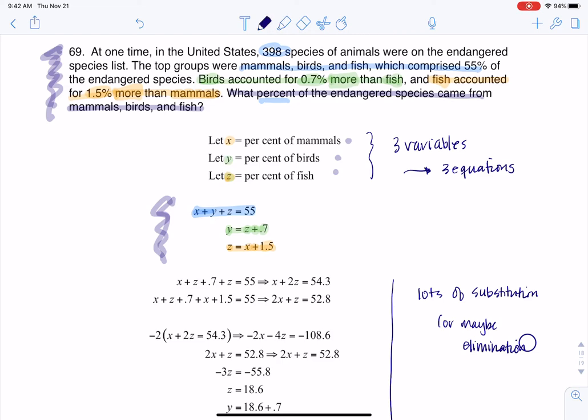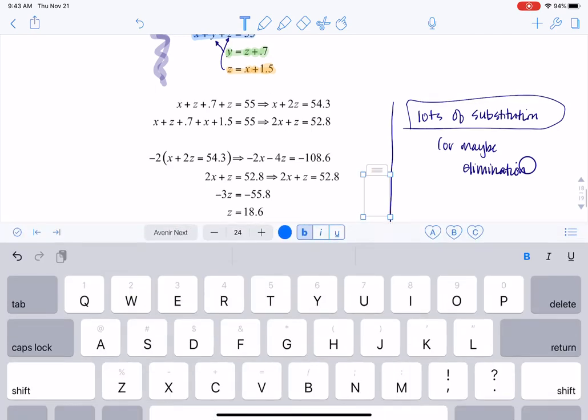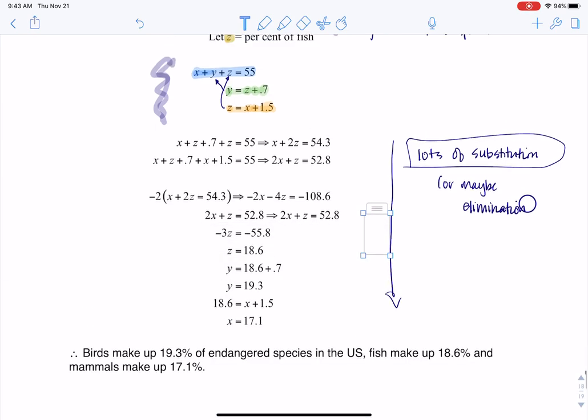And after that it's a bunch of substitution. So what I wind up doing is I'll sub y in here with z plus 0.7, and then I'll substitute z in here with x plus 1.5 and I just keep on going. Like I said there is a lot of substitution and I don't think that tends to be the part that we struggle with. I always think it's how did I get to these three equations from the word problem.